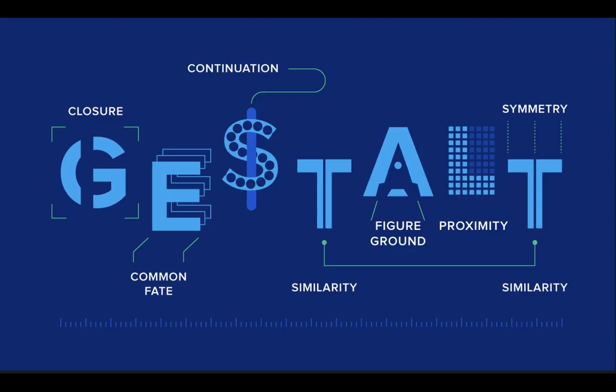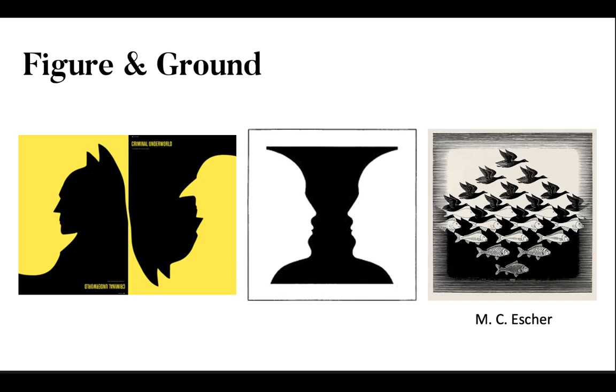For more research into grouping and also where this concept comes from, look into Gestalt principles. Gestalt principles are principles or laws of human perception that describe how humans group similar elements, recognize patterns, and simplify complex images when we perceive objects. Designers use the principles to organize content on websites and other interfaces so it is aesthetically pleasing and easy to understand. And you're probably already familiar with Gestalt principles. If you've ever seen an image that tricks the eye with a figure and ground demonstration, it was a Gestalt principle being implemented.